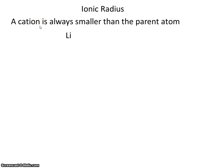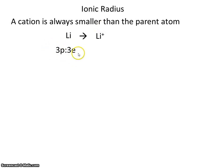Let's use lithium as an example. When lithium forms an ion, it loses an electron. If lithium gets rid of an electron, it's getting rid of something negative, so it's left with a positive charge. If you look at lithium on the periodic table, it has three protons. And if it's neutral, it also has three electrons. When lithium forms an ion, it loses an electron, so now it has three positives and two negatives.